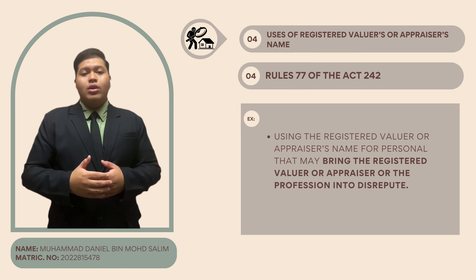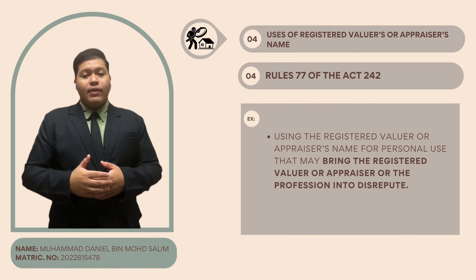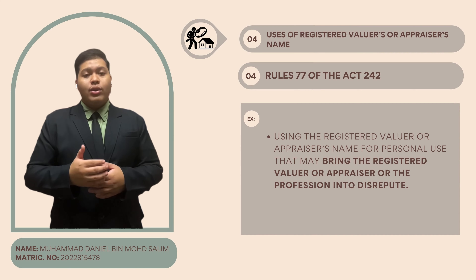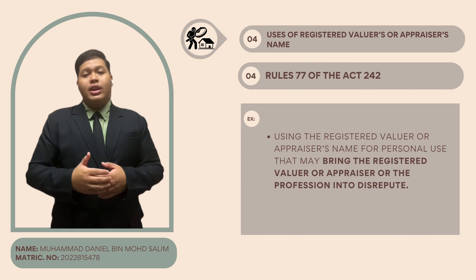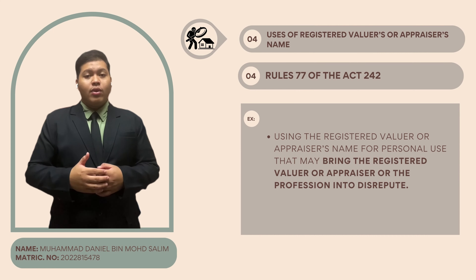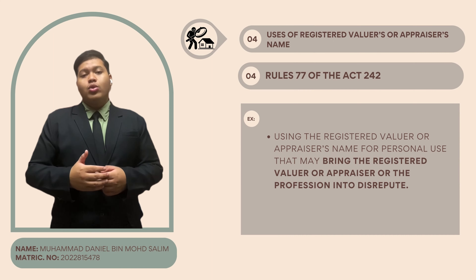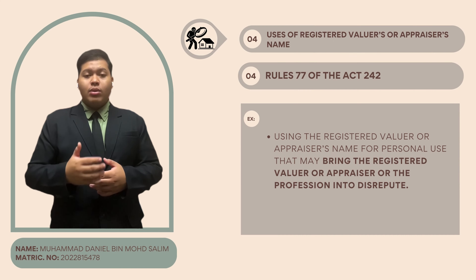Fourth, careful use of the valuer's name. Rule 77 stresses the careful use of registered valuers' or appraisers' names. Allowing non-registered individuals to use their name for services is strictly disallowed to avoid any damage to the profession's reputation.